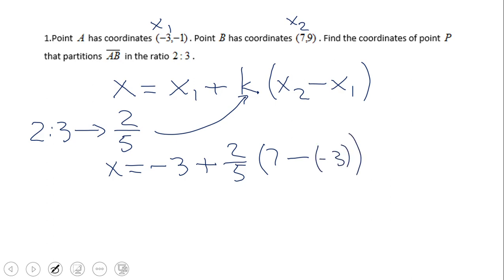So here is nothing else than simplifying. So we have negative 3 plus 2 fifths. 7 minus negative 3 is 10. Here I'll suggest you to simplify: 5 goes in 10 two times, and we have negative 3 plus 2 times 2, which is 4. That will be positive 1. So the x-coordinate of the point P will be 1.